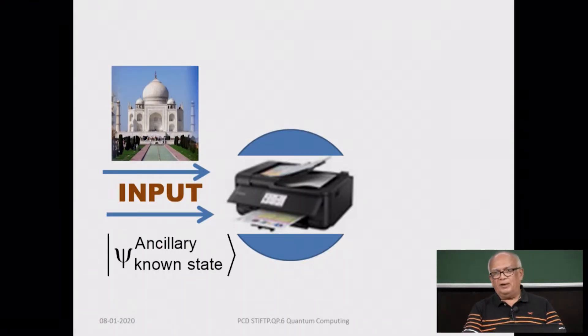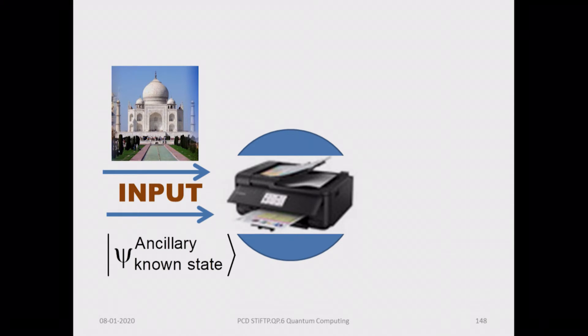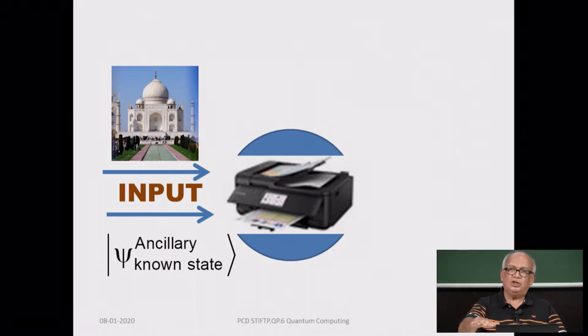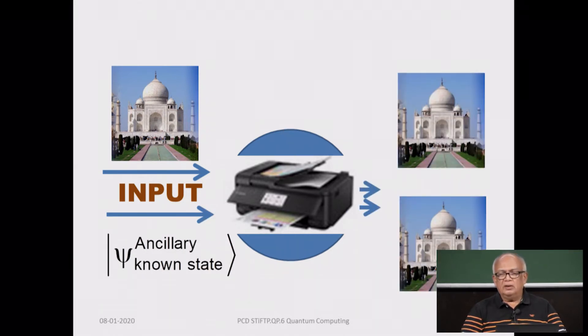So what is cloning? What is to copy? Suppose you have a photocopying machine and you put in a picture of the Taj Mahal. Then you also insert a blank sheet of paper — otherwise you get nothing. There is some ancillary material which is the blank paper which goes in, and that is the one on which the copy will be made. What comes out are two copies. This is cloning, this is copying. And the copying machine would be useless if it can copy only the picture of the Taj Mahal.